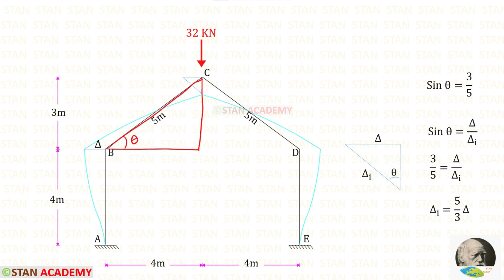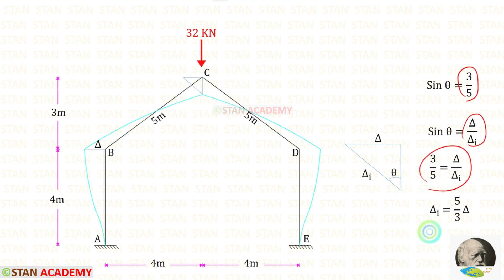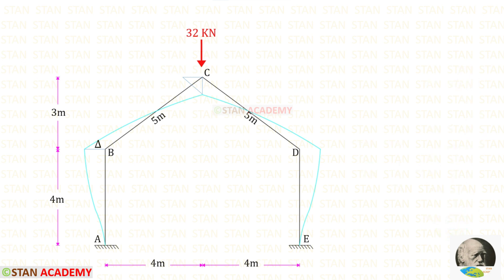Taking this triangle, let us find sin theta, which equals 3 upon 5. Now in the displacement triangle, sin theta equals delta upon delta_I. Equating these two expressions, we get delta_I = (5/3) × delta. Similarly, if the horizontal displacement on one side is delta, the other side is also delta; and if one inclined displacement is delta_I, the other is also delta_I.